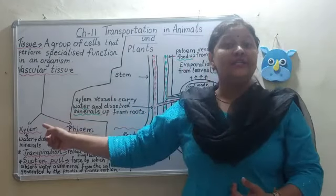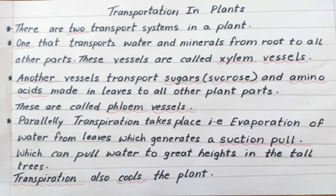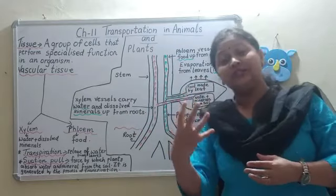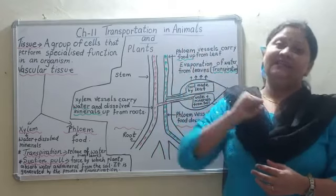The xylem is a tissue which forms a continuous network of channels that connects the root to the leaves through the stem and its branches. Likewise, water and dissolved minerals reach the leaves through this continuous network.